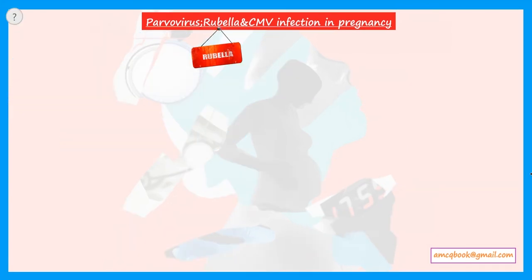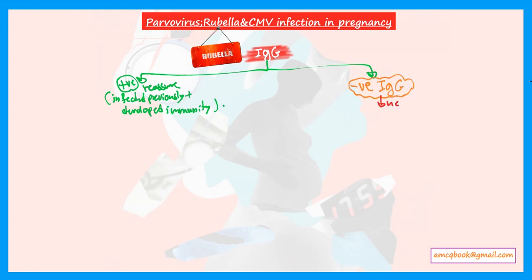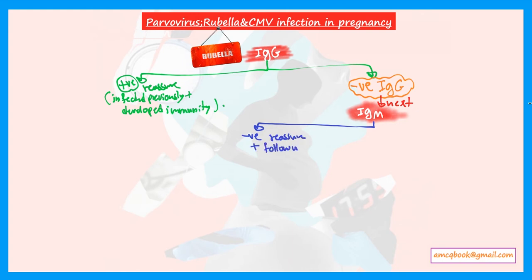Now let's discuss rubella infection in pregnancy. If a pregnant woman comes to you having had contact with rubella infection, how do we deal with her? As with parvovirus, start with IgG. If IgG is positive, reassure — the woman was previously infected and has immunity, so there is no risk to the baby. If IgG is negative, she was not previously infected, so check IgM to determine current infection status.